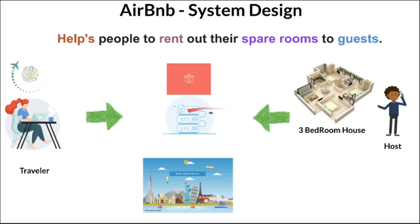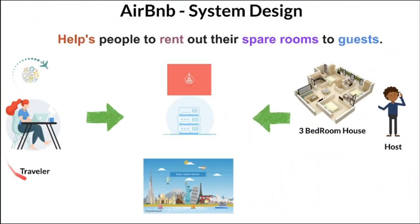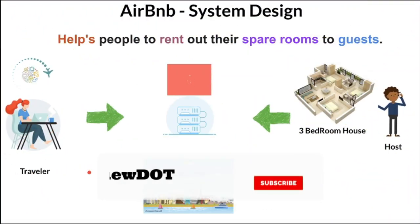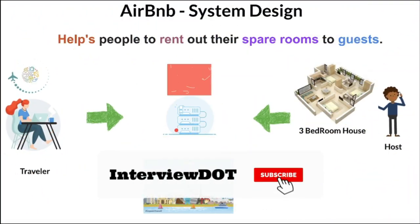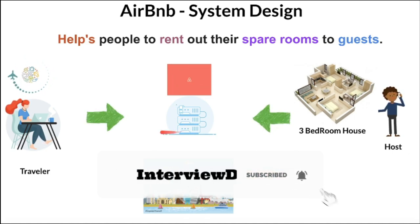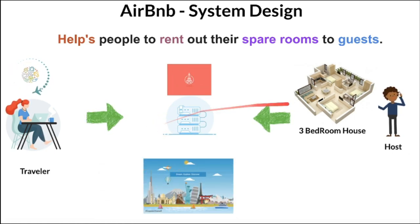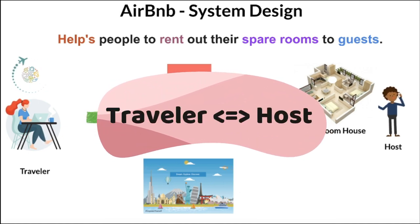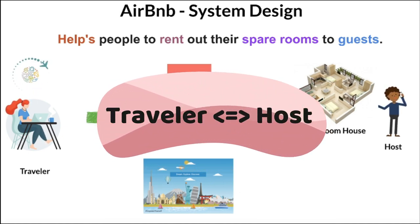Now the rental object details are available to the application. On the other side, a traveler is looking for a room to stay. So the traveler connects to the Airbnb application, creates a profile, and searches for rooms. Once he finds a room to stay, he pays and confirms the booking. This is the basic use case in the Airbnb application.